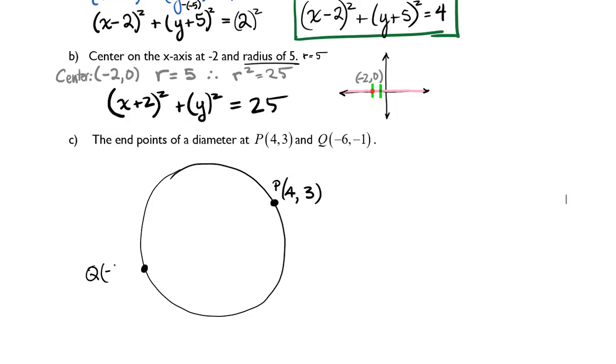We also know that there is a point Q at (-6, -1), and I need to find out how far it is from one of these points to the other, because I know this is my diameter between those two points. If I find how long it is from one point to the other, I can then divide it in half and that will give me my radius r.